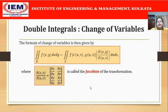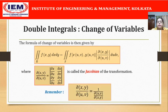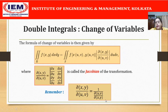We will now see how to apply this concept in problems. At this moment I will request you to remember one property of the Jacobian which will be helpful: ∂(x,y)/∂(u,v) equals 1 divided by ∂(u,v)/∂(x,y). We will see that very often in problems this property will be helpful to calculate the Jacobian.